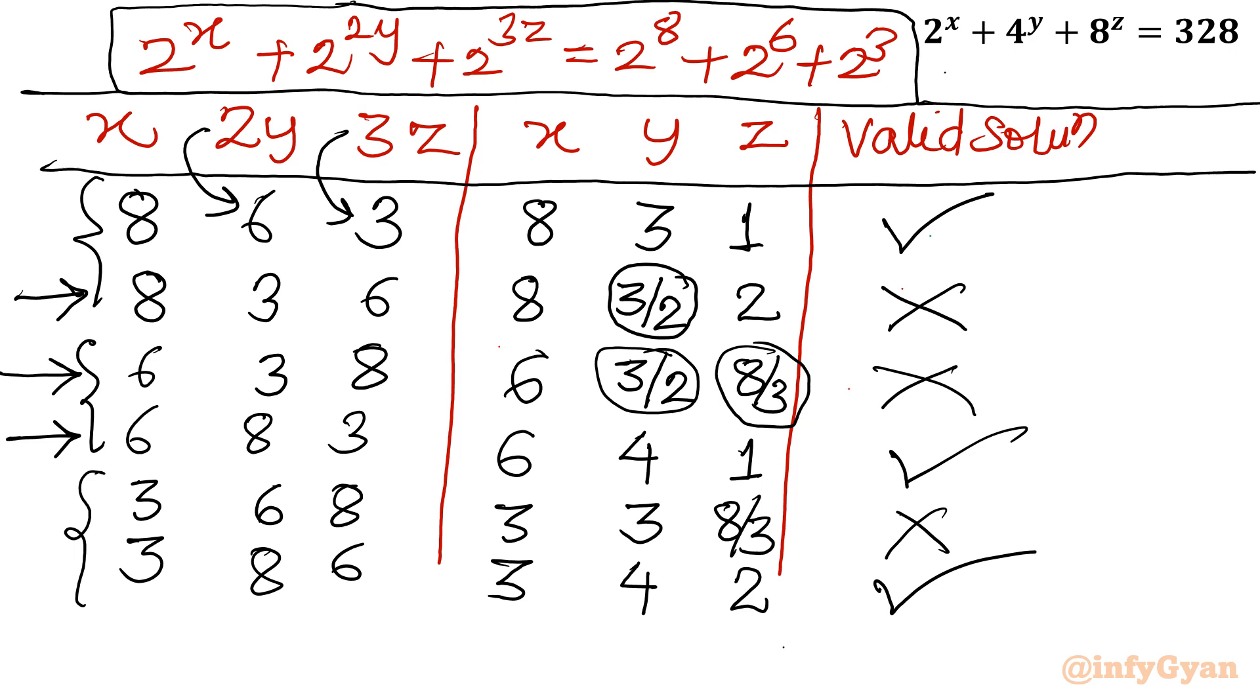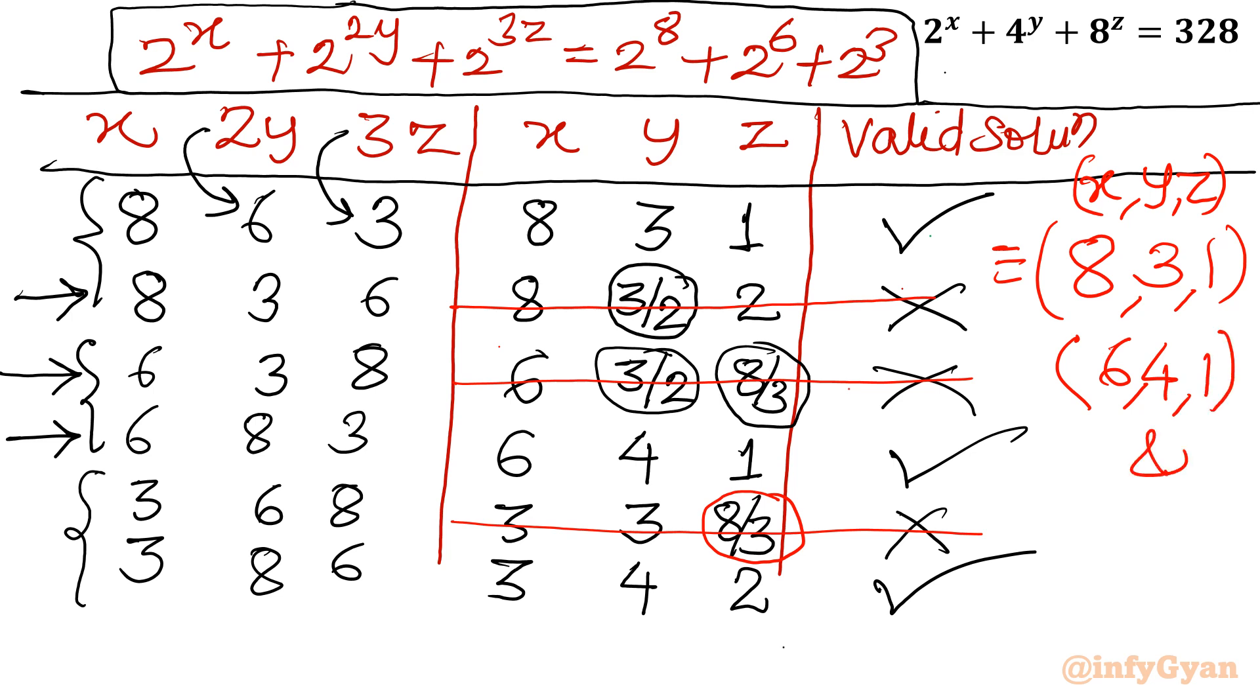Now you can see which solution is rejected and which solution you will accept. So these 3 because of 8 over 3, so we will cancel these solutions. So accepted solution will be 8, 3, 1 for x, y, z values. Second set of triplet we will consider 6, 4, 1. And third and last row is 3, 4, 2. So final solution is (8, 3, 1), (6, 4, 1), and (3, 4, 2). Three possible triplets are there for x, y, z natural numbers.